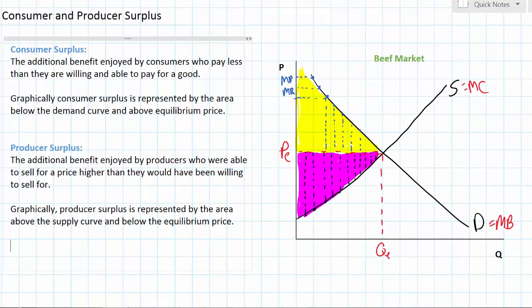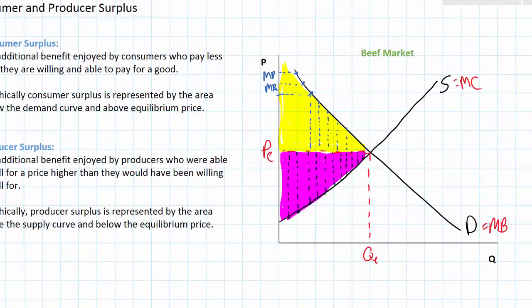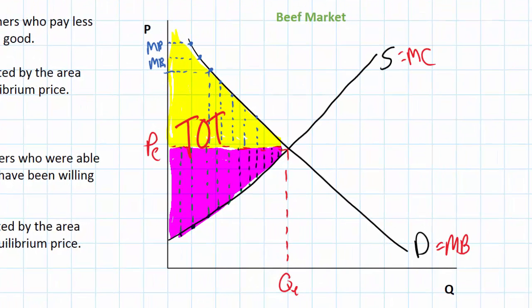At the equilibrium price and quantity, consumer surplus and producer surplus are actually maximized. We'll show in another video how at any price or quantity combination other than PE and QE there will be a decrease in the total amount of producer and consumer surplus. Sometimes we refer to the sum of producer and consumer surplus as community surplus, or the term I prefer is total welfare. Welfare is something that should be maximized — we want to make consumers and producers better off, and there is no way to make them better off in a market than when price and quantity are at equilibrium.